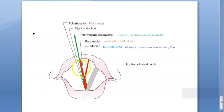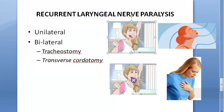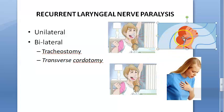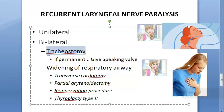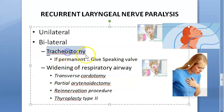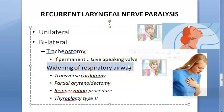Dyspnea and stridor become worse on exertion or during an attack of acute laryngitis. In bilateral recurrent laryngeal nerve paralysis, the vocal cords are close together, so voice has no issues. If unilateral, the patient can still have an asymptomatic life. Bilaterally, they will have breathing problems. Treatment: tracheostomy is performed if the patient cannot breathe in an emergency or develops upper respiratory tract infection. Tracheostomy can be temporary or permanent; if permanent, a speaking valve is provided so the patient can talk.